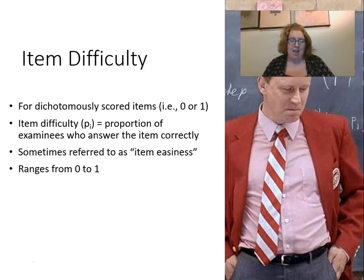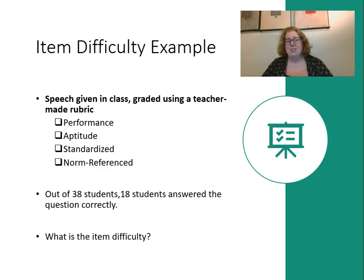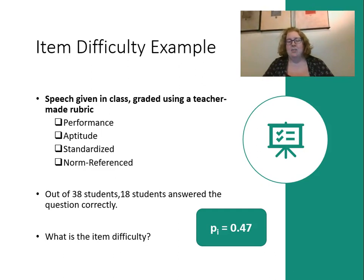Here's how we calculate it: out of 38 students, 18 answered this question correctly, so item difficulty is 18 divided by 38, which gives you 0.47. About 47% of students got that item correct — less than half — so this was a really difficult item. We almost always want to see more than half our students getting an item correct. Item difficulty is designated as P sub i.